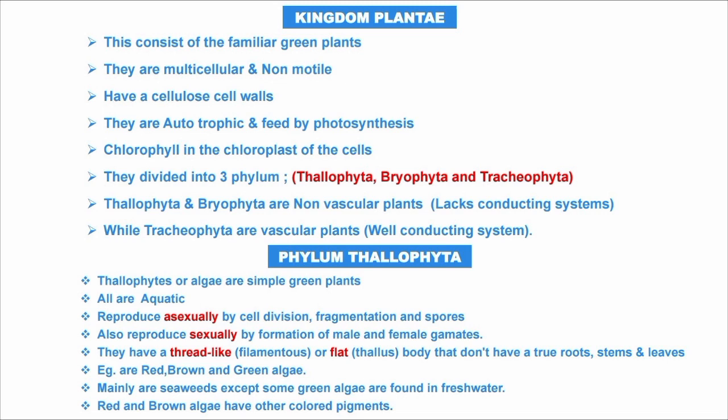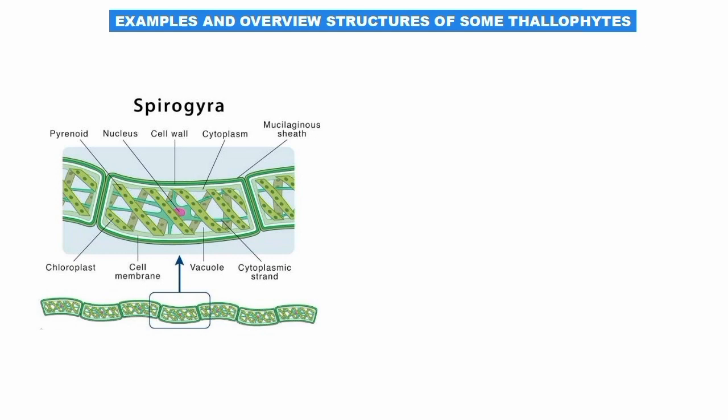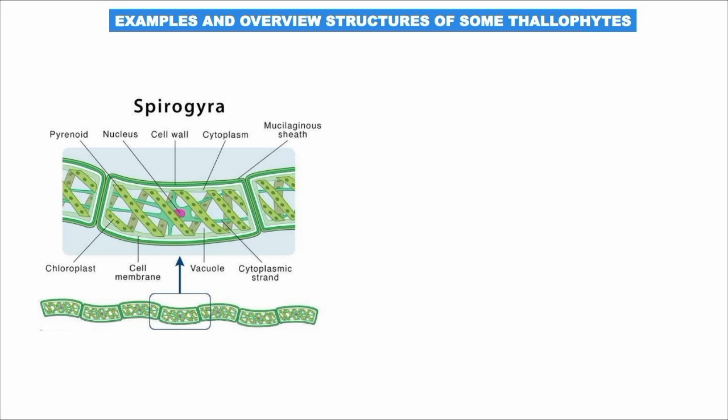There are many types of algae which we will discuss in a future video. Let's talk about some examples of Thallophyta, specifically simple green algae. The first one is Spirogyra. A typical Spirogyra cell contains a pyrenoid, nucleus, cell wall, cytoplasm, cytoplasmic strand, vacuole, cell membrane, and chloroplast — which means they can manufacture their own food. Spirogyra is a simple green algae found in ponds and ditches, made of hair-like green filaments, each made of a single chain of identical cells that drift passively on water.